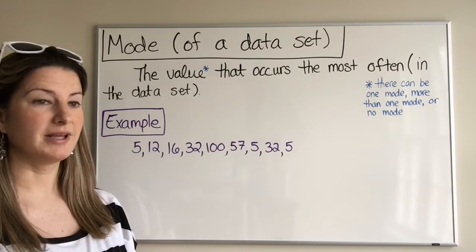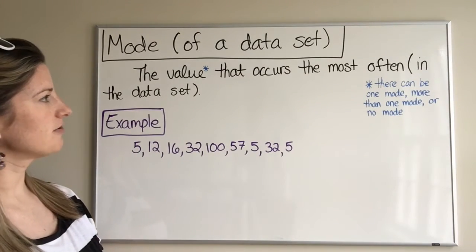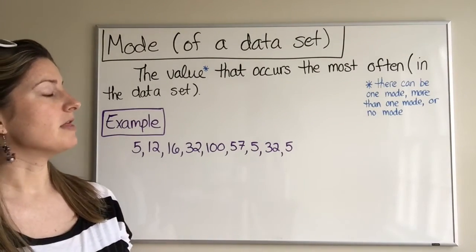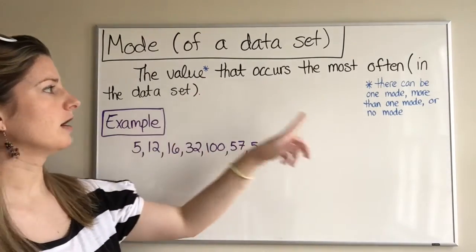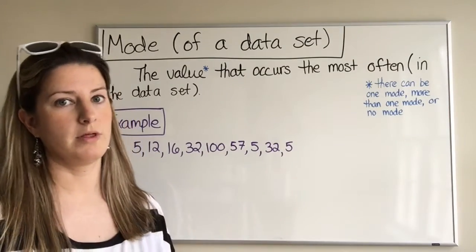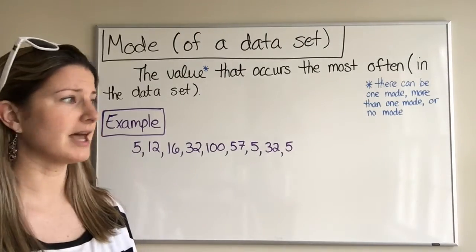Here's a definition for mode. The mode of a data set is the value that occurs the most often in the data set. One thing to be aware of: there can be one mode, more than one mode, or no mode. Again, it's the value that occurs the most often in a data set.